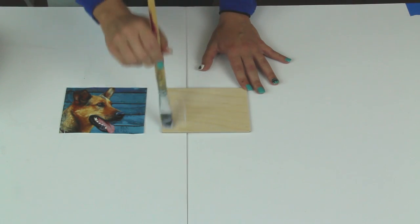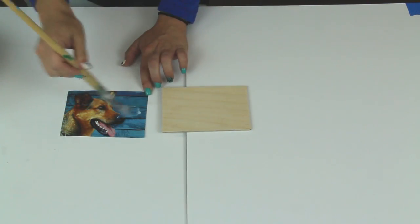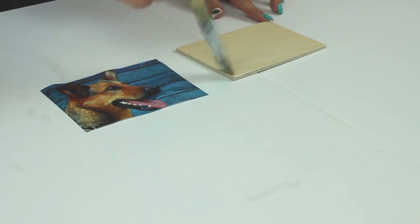Apply Photo Transfer Medium to the front of the photo and to the project surface. Allow them both to dry completely. Be sure to rinse your brush between every step to ensure the smoothest coverage.